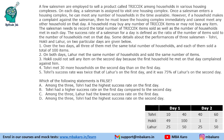Which of the following statements is false? First: among the three, Tohuri had the highest success rate on the first day. Tohuri has a success rate of 4, Hockley has approximately 2.02, and Lahur has 2. So Tohuri does have the highest — this is true. Second: Tohuri had a higher success rate on Day 1 compared to Day 2 — that is also true. Third: among the three, Lahur had the lowest success rate on the first day — Lahur does have the lowest, so that is true. We have eliminated three options.